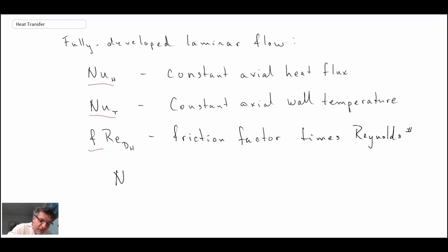In both of the non-dimensional numbers, Nusselt and Reynolds, the length scale is evaluated based on using the hydraulic diameter D_H. So that is how you handle cases of non-circular geometry.